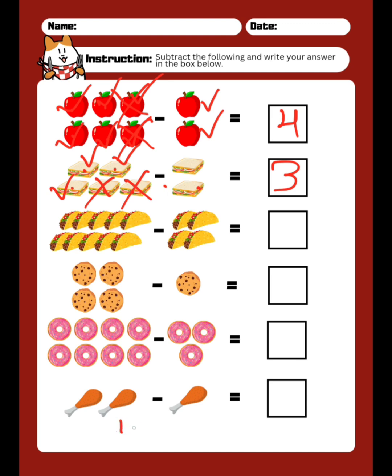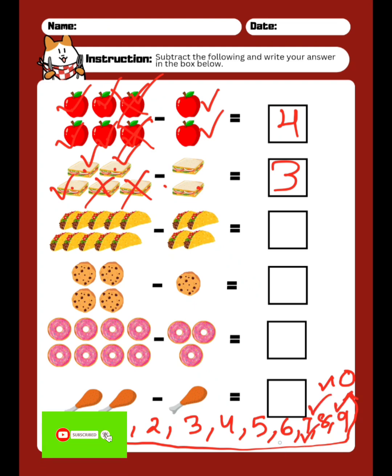We all learned 1, 2, 3, 4, 5, 6, 7, 8, 9, and 10. This is the forward counting. But whenever we count backward, that means 10, 9, 8, 7, 6, 5, 4, 3, 2, and 1. So numbers are decreasing. Subtraction means numbers are decreasing.